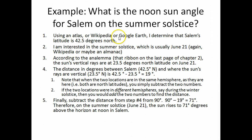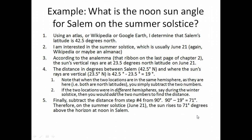Because Salem and the sun's vertical rays are in the same hemisphere, rather than adding the two latitudes, we subtract them to find the distance. Salem is at 42.5 degrees north, and the vertical rays are at 23.5 degrees north, so 42.5 minus 23.5 gives us 19 degrees. Lastly, we subtract that from 90: 90 minus 19 equals 71 degrees. So on June 21st, the sun is 71 degrees above the horizon in Salem.